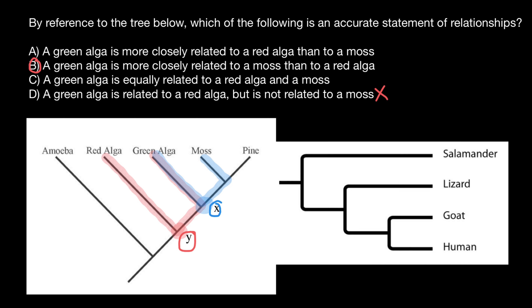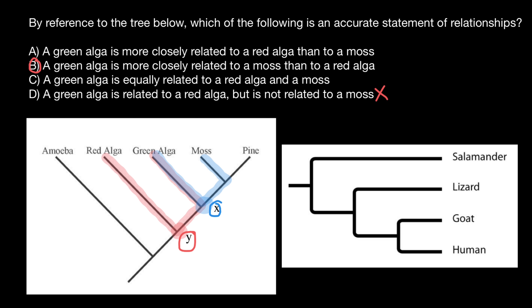I also want to show you another type of phylogenetic tree. In such phylogenetic trees, if you want to find how closely salamander and lizards are related, we count the length of this line, this one, and this one. We do not take into account the vertical lines, because if you put a time line here, as you see, these vertical lines are going to be just a point on this timeline. So we only count the horizontal lines here.